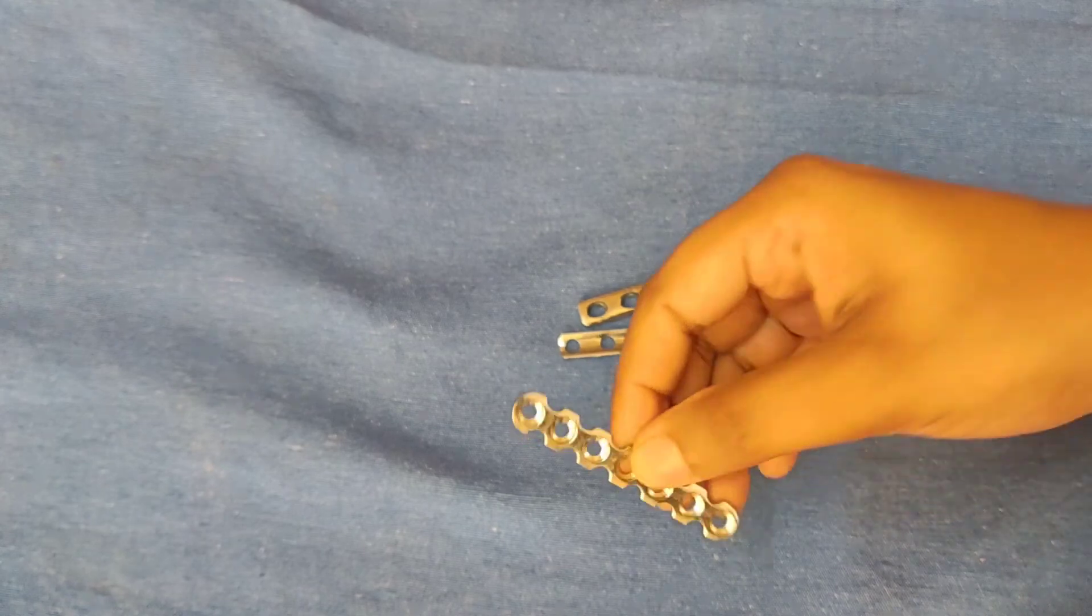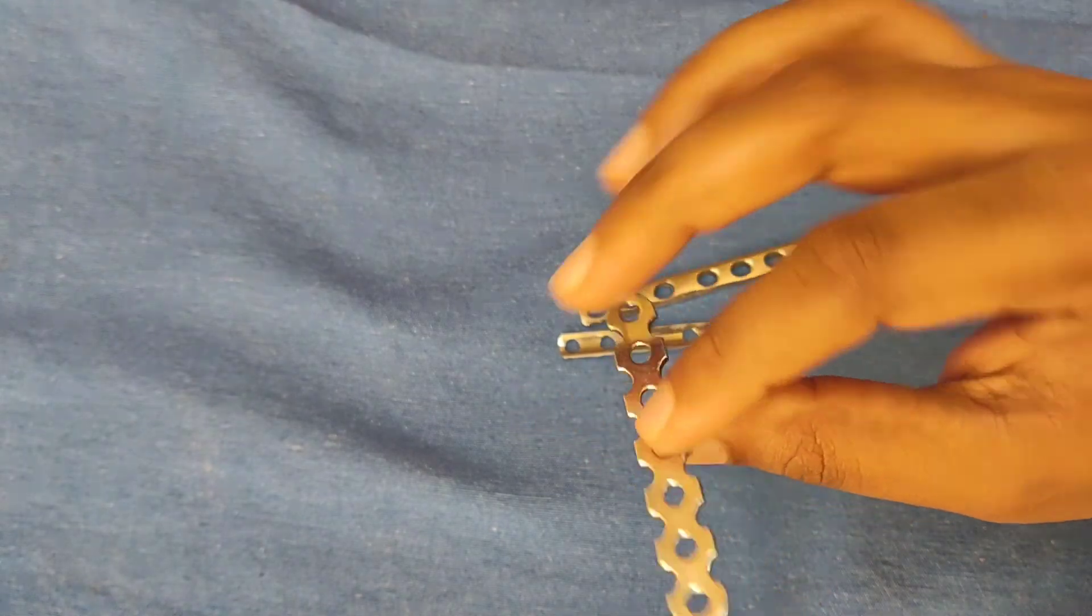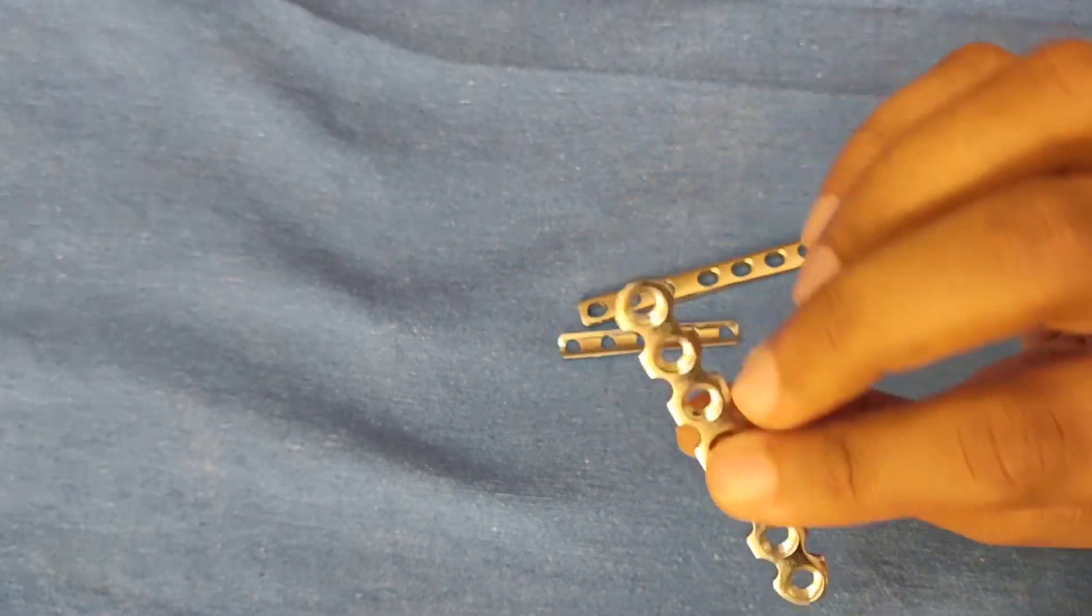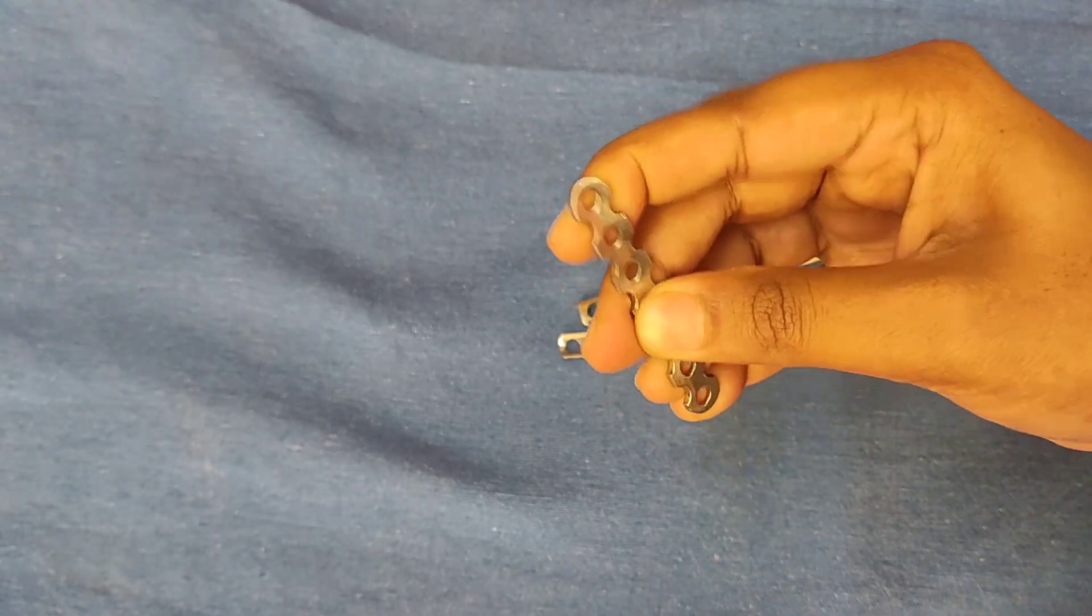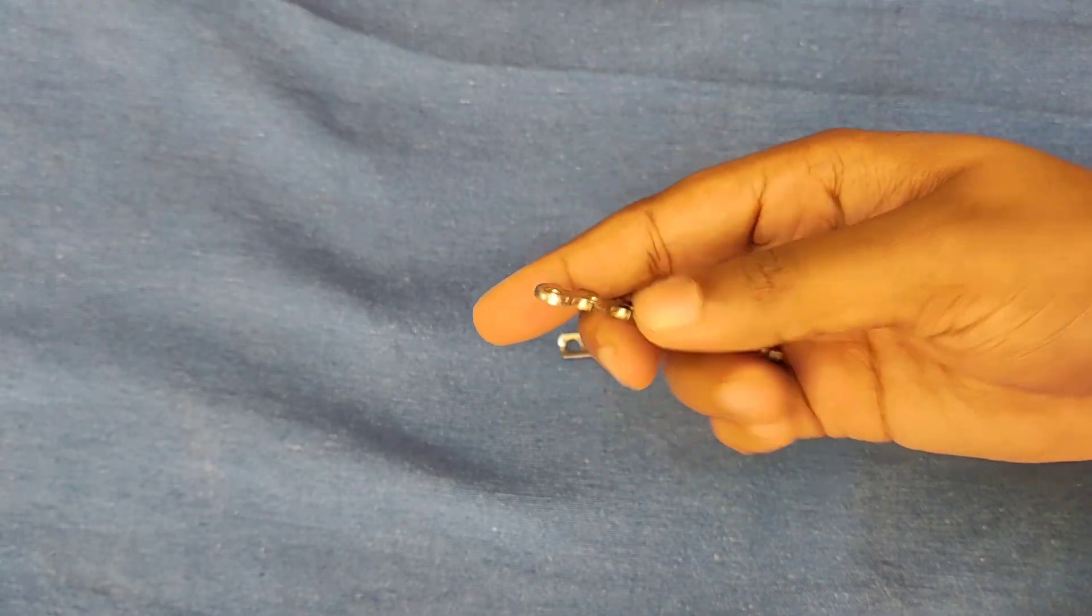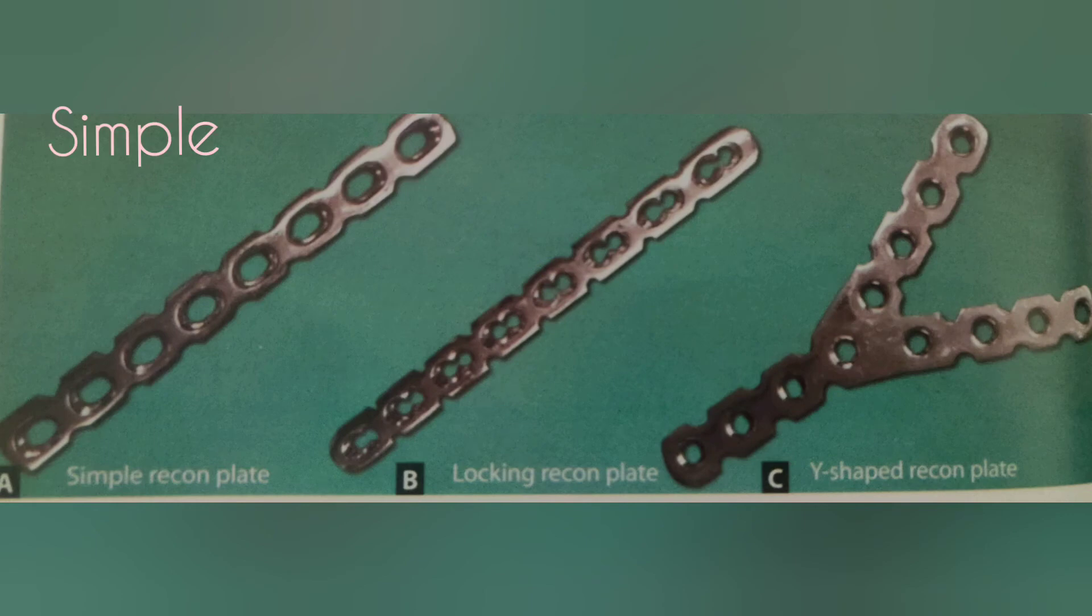Next is reconstruction plates. These plates can be molded manually according to the contour of bone. There are various types of reconstruction plates. There are simple reconstruction plate, locking plate or a Y-shaped plate.